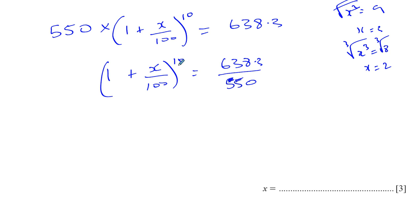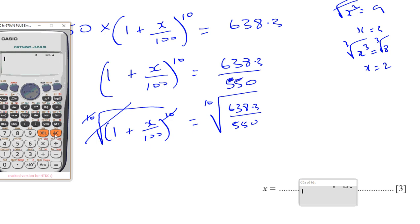So, if we have something raised to the power of 10 and we want to get rid of the power of 10, then we can take the 10th root of both sides. So, I take the 10th root of 1 plus X over 100 to the power of 10. And that takes care of getting rid of the 10th root. But I must also take the 10th root of the other side. So, the 10th root of 638.3 divided by 550.